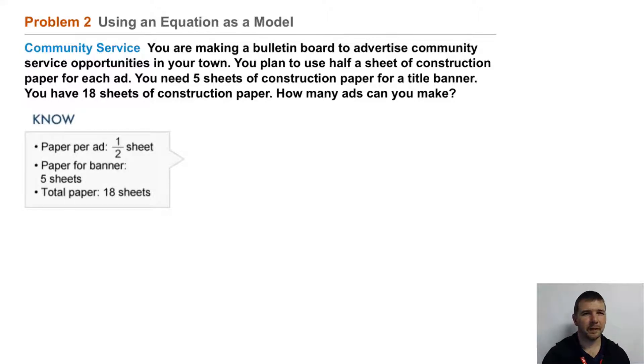First, consider what you know. You know the paper per ad, that's one half sheet. You know the paper for a banner, that's five sheets. And you know the total paper you have access to is 18 sheets.